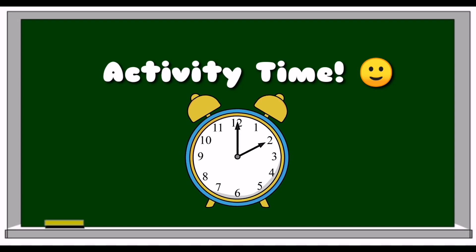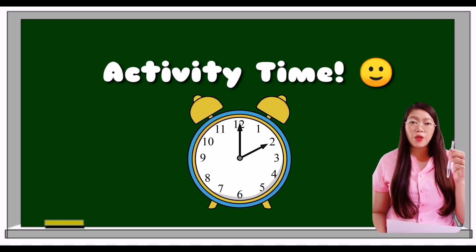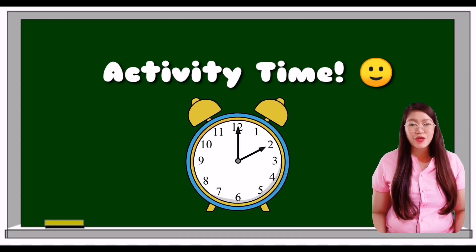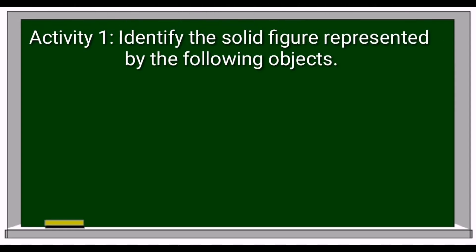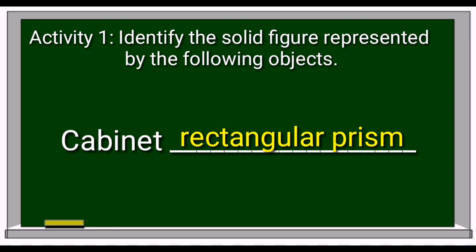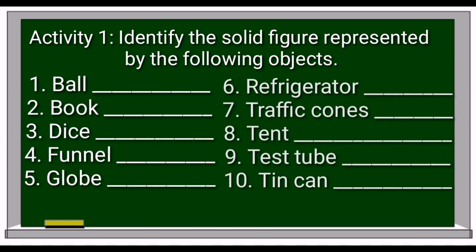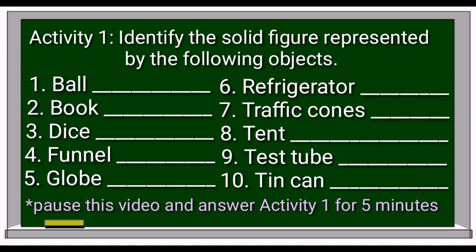Activity time! To answer our activity, you may need a piece of paper, a ball pen, and don't forget to write your name, section, subject, and the name of your teacher. Activity 1: Identify the solid figure represented by the following objects. For example, cabinet — the correct answer is rectangular prism. Now kids, get ready! It's your turn! Pause this video and answer Activity 1 for 5 minutes. Good luck!